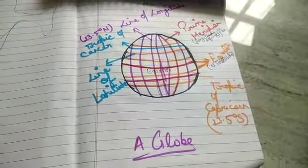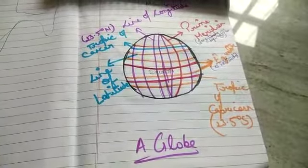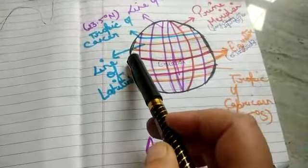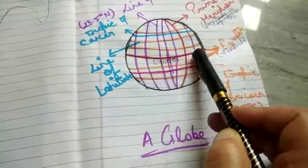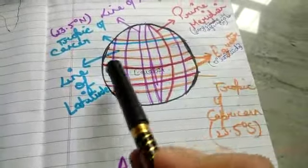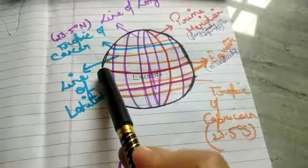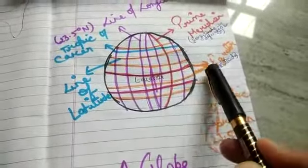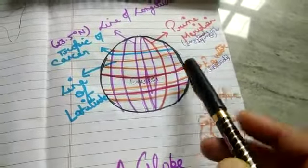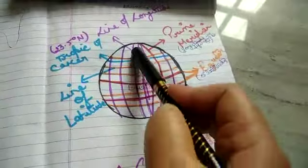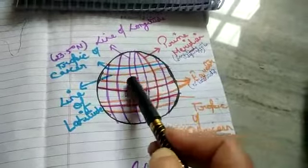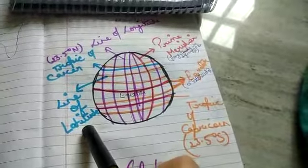This is the picture of a globe. The line that passes through the center of this globe is known as the equator. The standing lines are known as lines of longitude. These sleeping lines are known as lines of latitude.